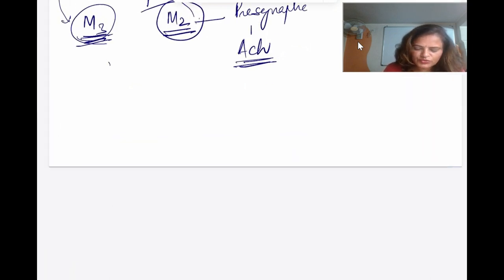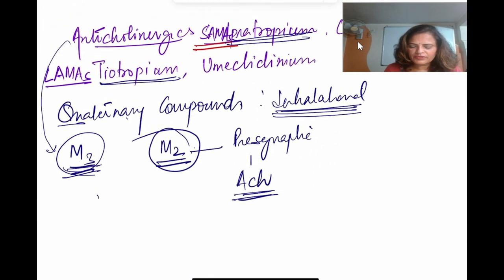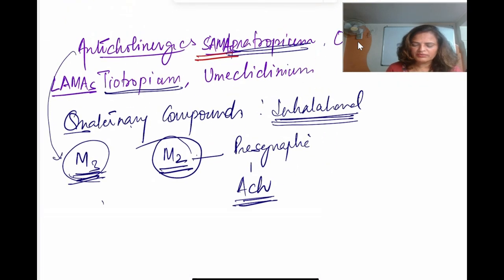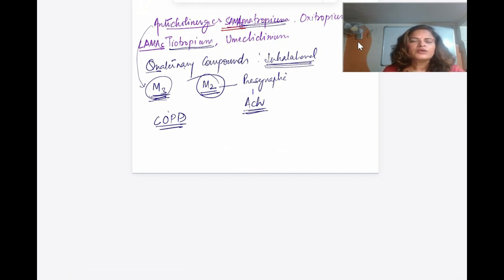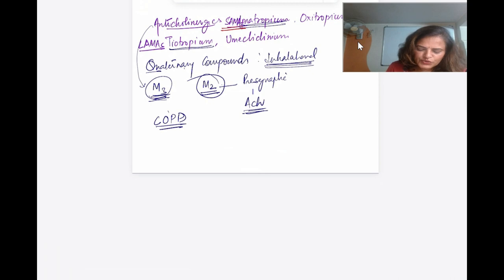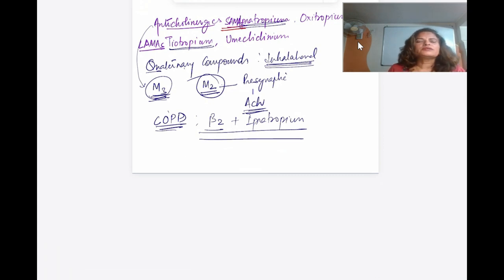These anticholinergic drugs are more effective for chronic obstructive pulmonary disease (COPD) because vagal tone is more present in the larger bronchi. Usually, ipratropium is more effective when given together with a beta-2 agonist for bronchial asthma. This is all about the anticholinergic drug group.